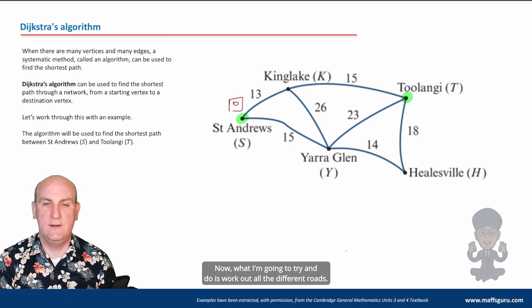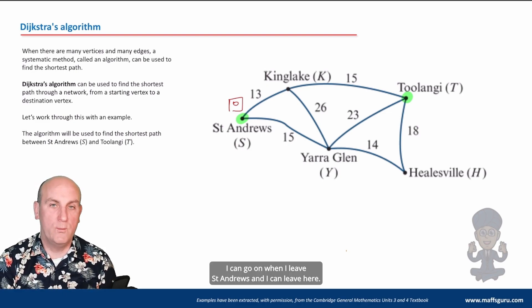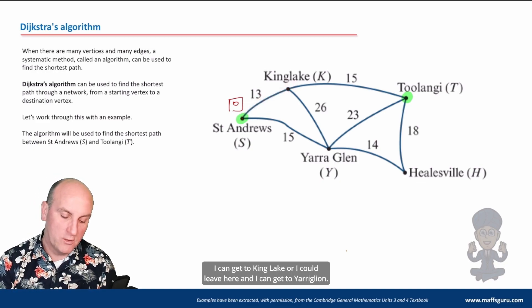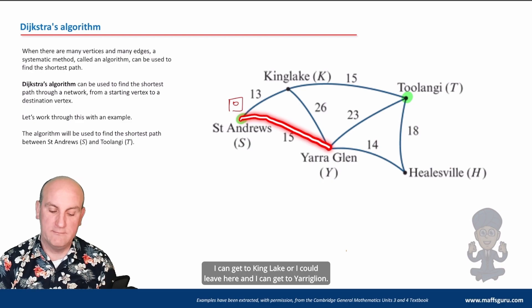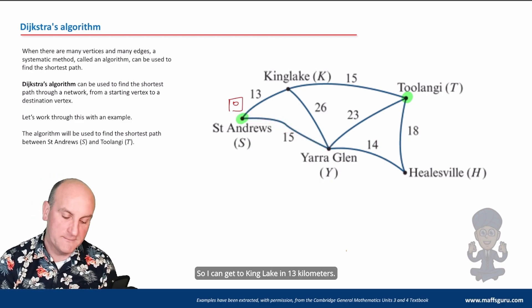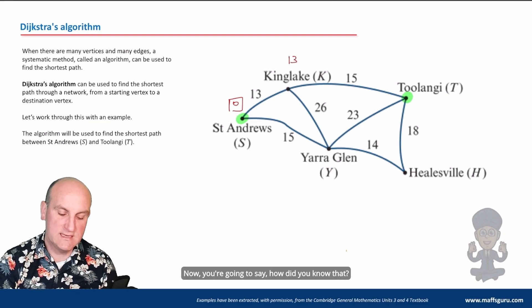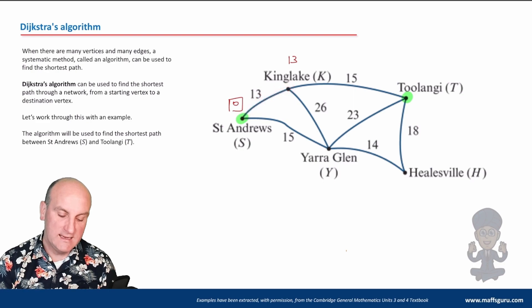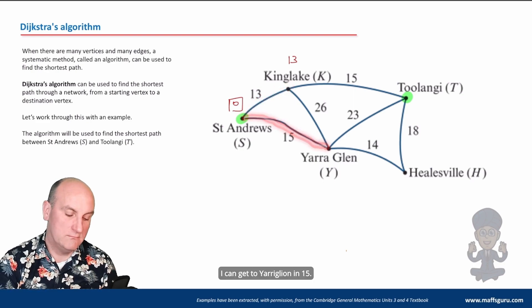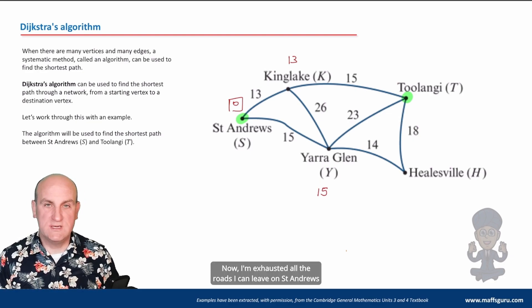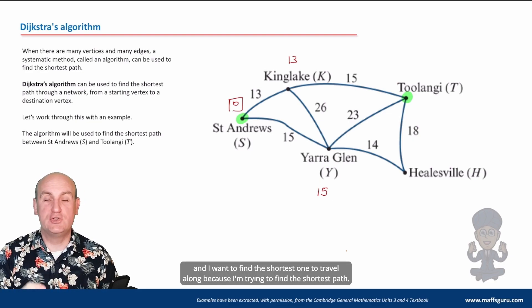Now what I'm going to try and do is work out all the different roads I can go on when I leave St Andrews. And I can leave here, I can get to Kinglake, or I could leave here and I can get to Yarra Glen. Now they're the only two places I can get to. So I can get to Kinglake in 13 kilometers. Now you're going to say, how did you know that? Well, that's what that weight there says: 13 kilometers. I can get to Yarra Glen in 15. Oh, okay then, so I'm going to put a 15 there.